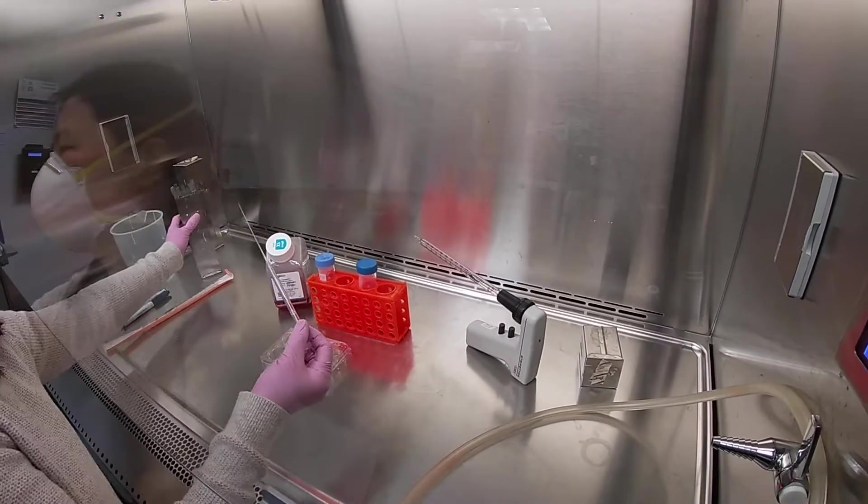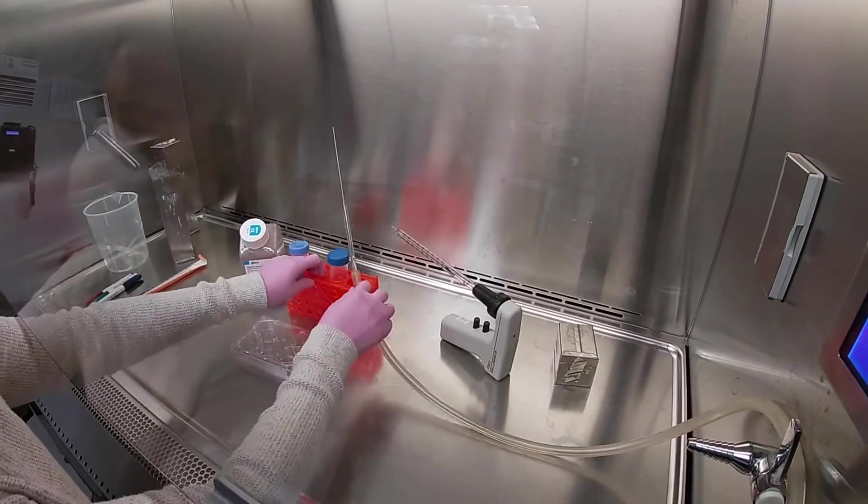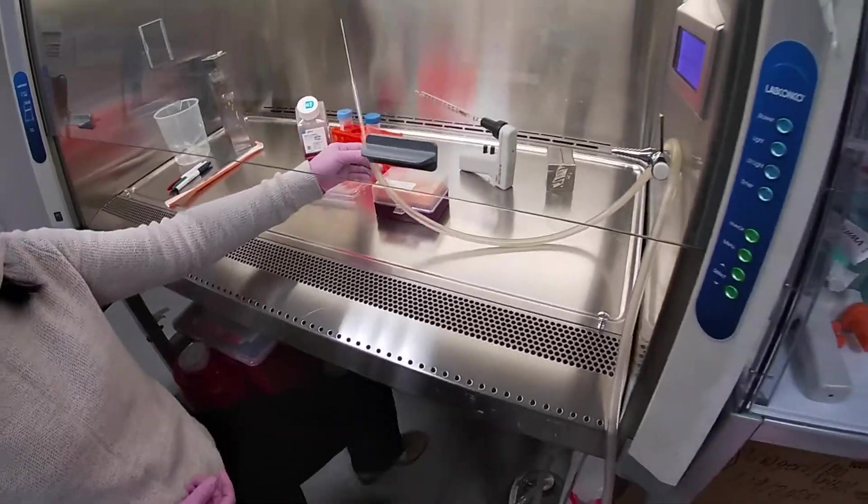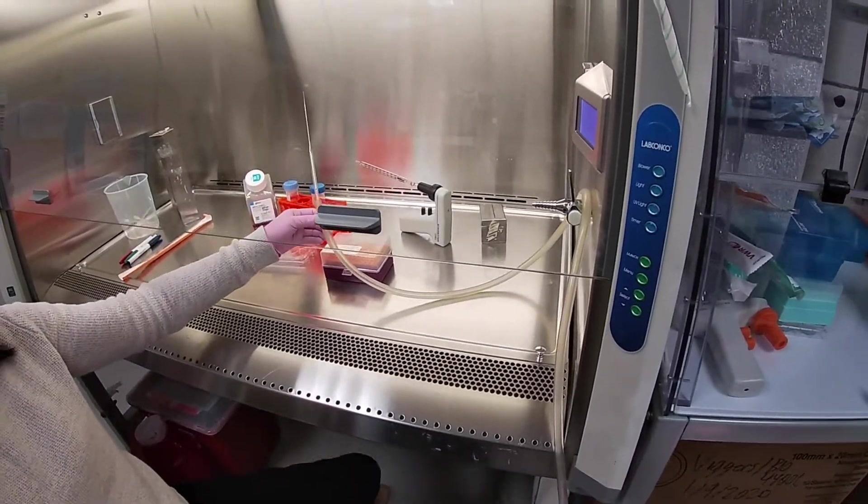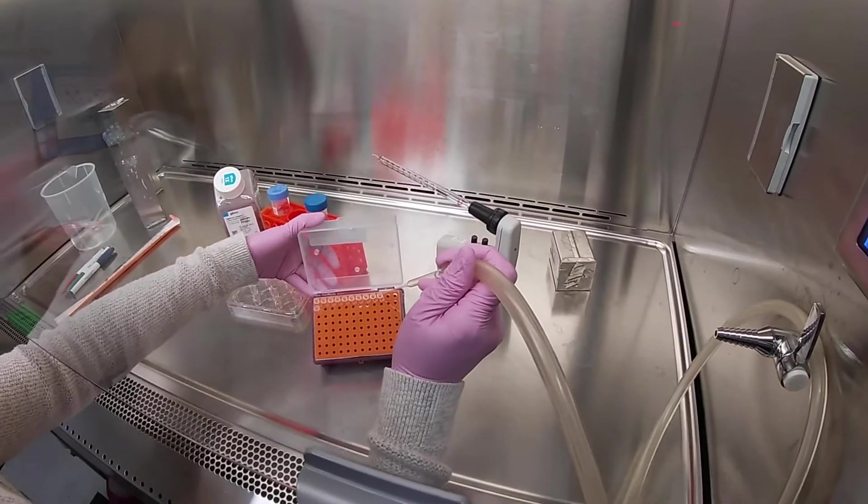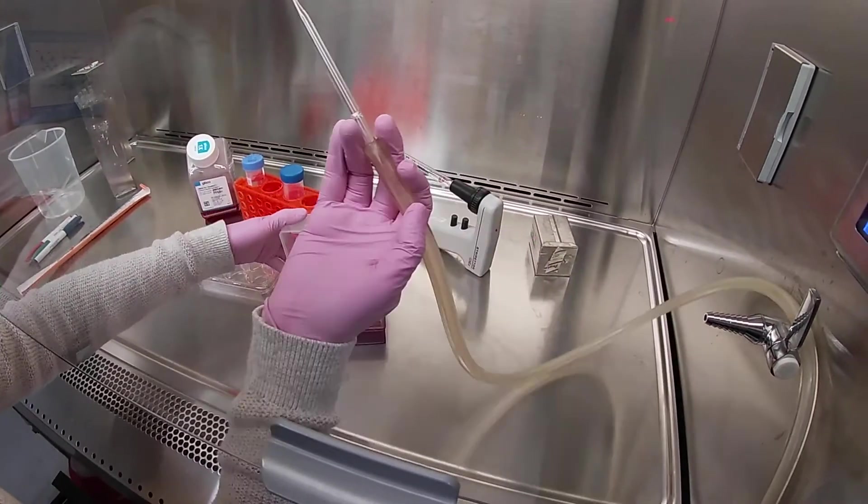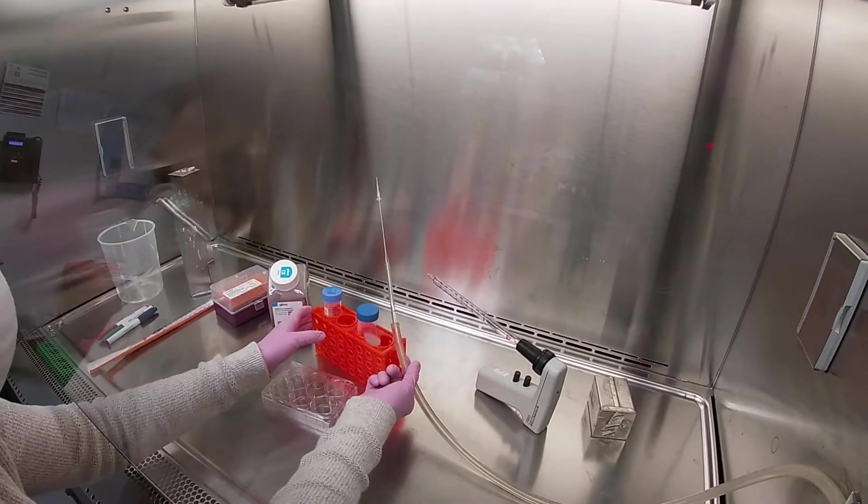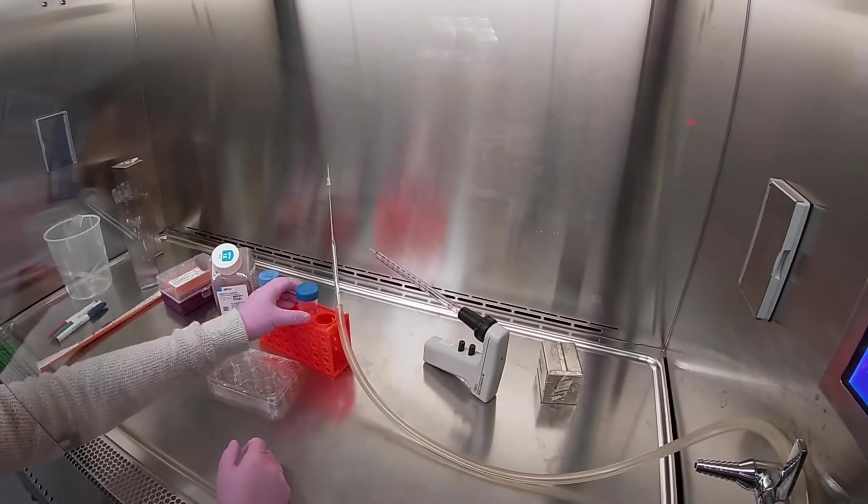Go ahead and set up a glass Pasteur pipette because you will be using that to vacuum up all of the spent media. Today, we're actually going to be using micropipette tips to slow down the suctioning. When you turn on the vacuum, pick up a micropipette tip and this will slow down the vacuuming whenever you're taking up the spent media.